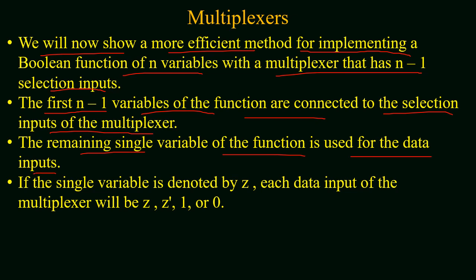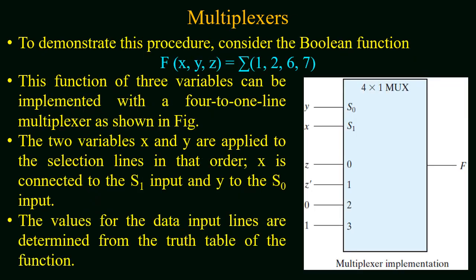If the single variable is denoted by z, then each data input of the multiplexer will be z, z prime, 1, or 0. To demonstrate this procedure, consider the boolean function of three variables x, y, and z equal to the sum of minterms at 1, 2, 6, and 7.